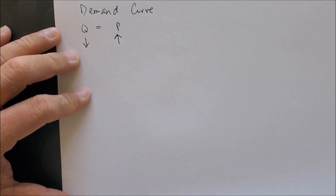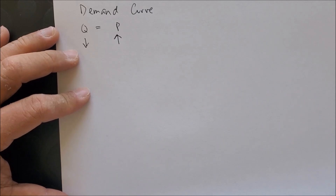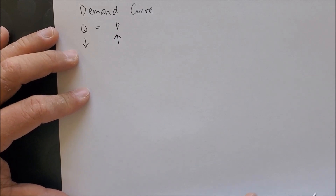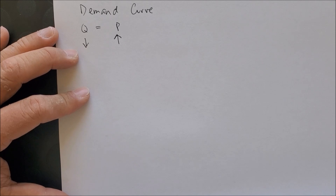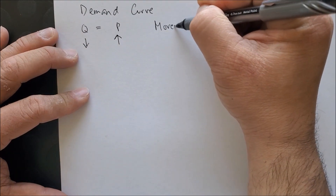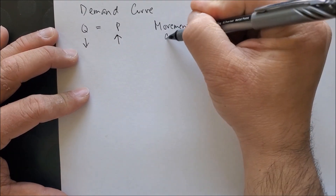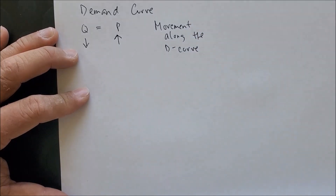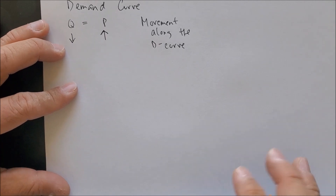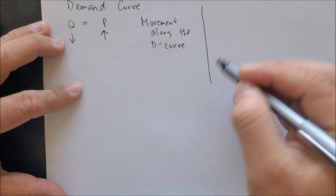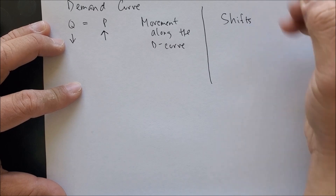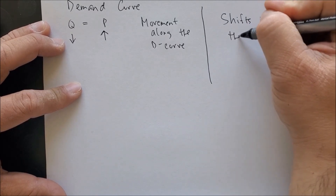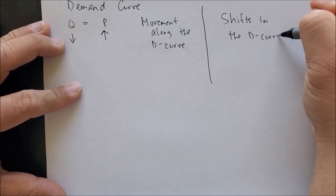We want to see exactly what factors affect the demand curve, and we can break this up into two categories. The first category is movement along the demand curve, and the other category is shifts in the demand curve.